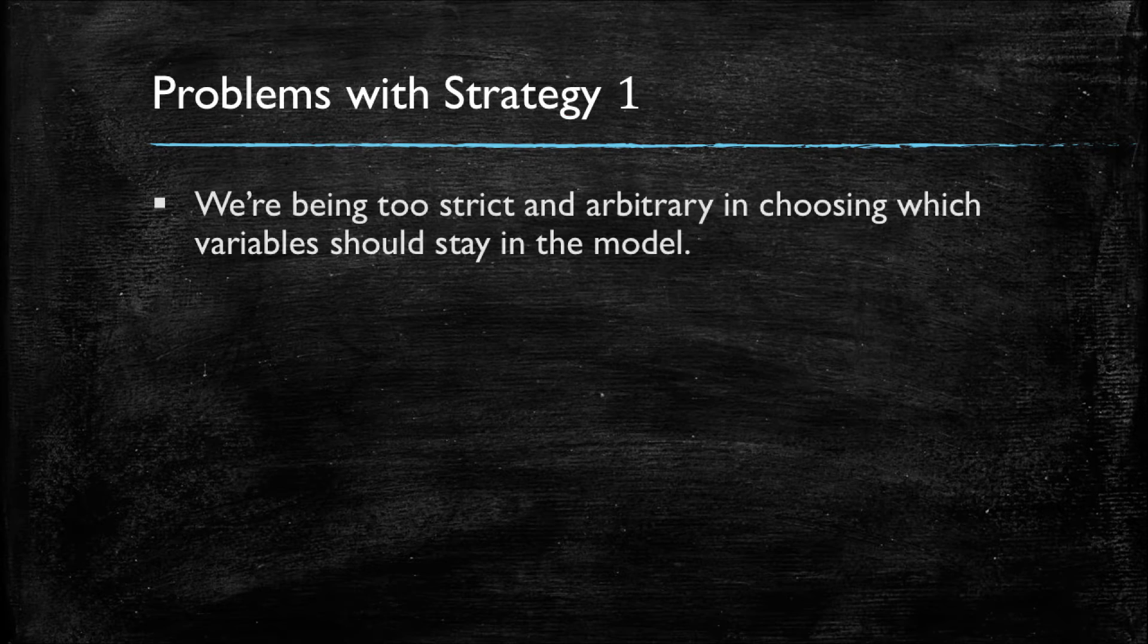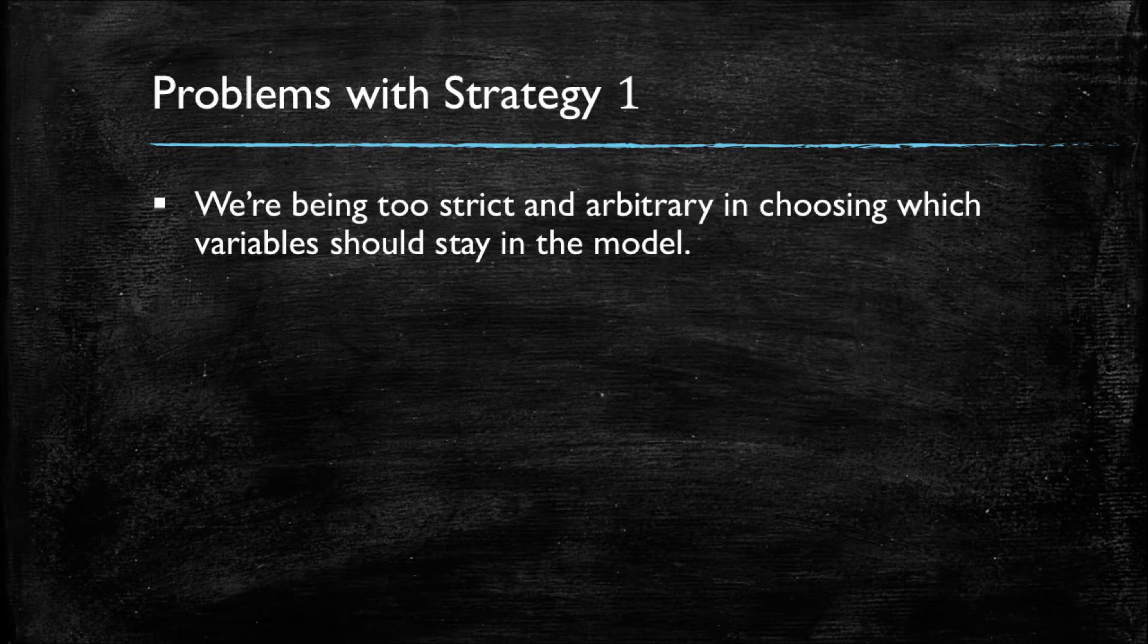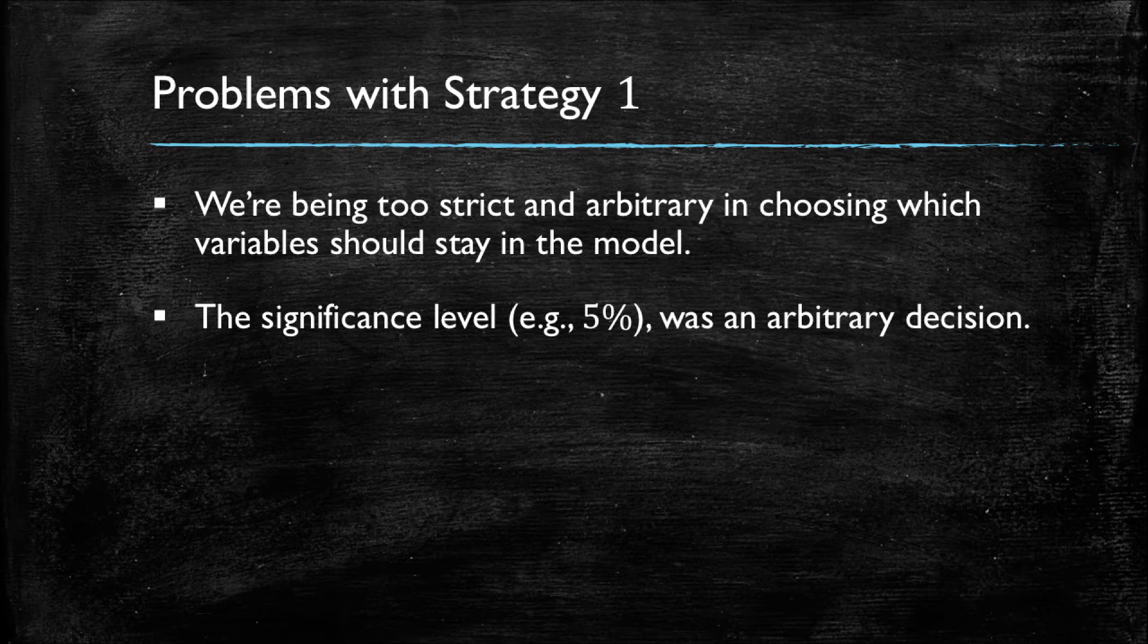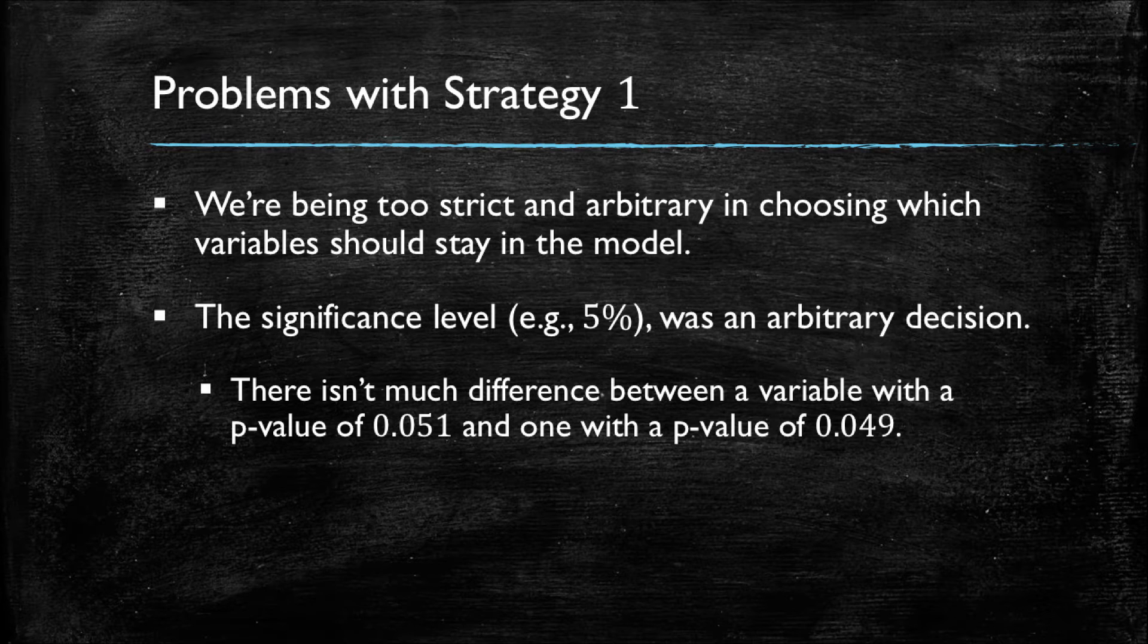The underlying problem with this strategy is that we are being too strict and somewhat arbitrary in choosing which variables stay in our models. Let's remember that it was us who chose to use a 5% level to decide if a variable stayed or not. However, if you think about this objectively, there really isn't much difference between a variable that has a p-value of 5.1% versus one that could have a p-value of 4.9%. Such small difference could be due to random factors that we do not observe, and hence, using such strict criteria could not be beneficial for us.